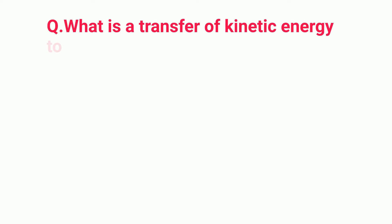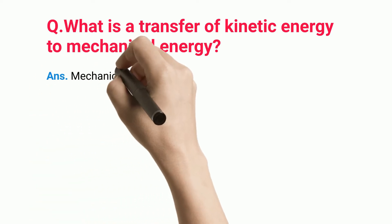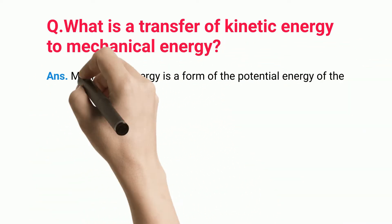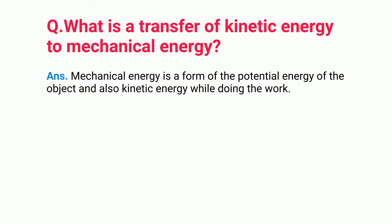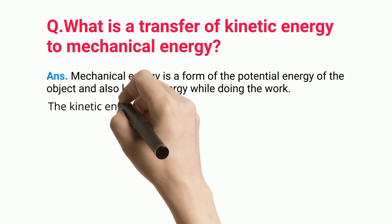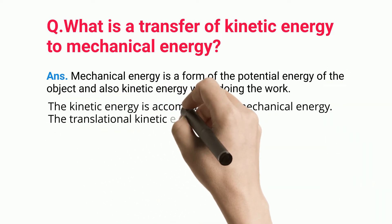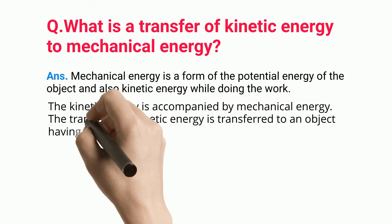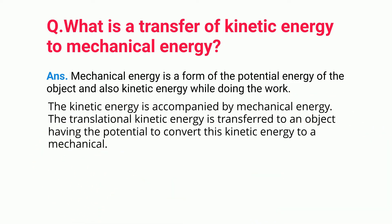What is a transfer of kinetic energy to mechanical energy? Mechanical energy is a form of the potential energy of the object and also kinetic energy while doing the work. The kinetic energy is accompanied by mechanical energy. The translational kinetic energy is transferred to an object having the potential to convert this kinetic energy to a mechanical.